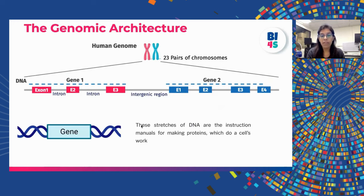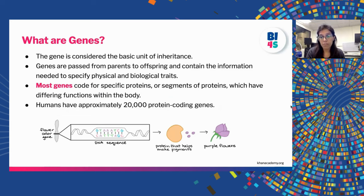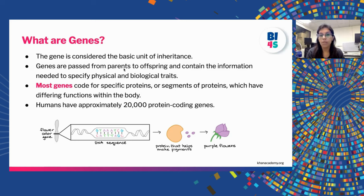Genes are nothing but stretches of DNA that are the instructions — manuals for making proteins — which tell the body what to do and how to work. Genes are made up of segments of DNA and they determine physical traits, including the color of your eyes or whether your hair is straight or curly, which is why someone might say you have your mother's smile, because you inherit your genes from your parents. Genes are considered the basic unit of inheritance; they are passed on from parents to offspring.